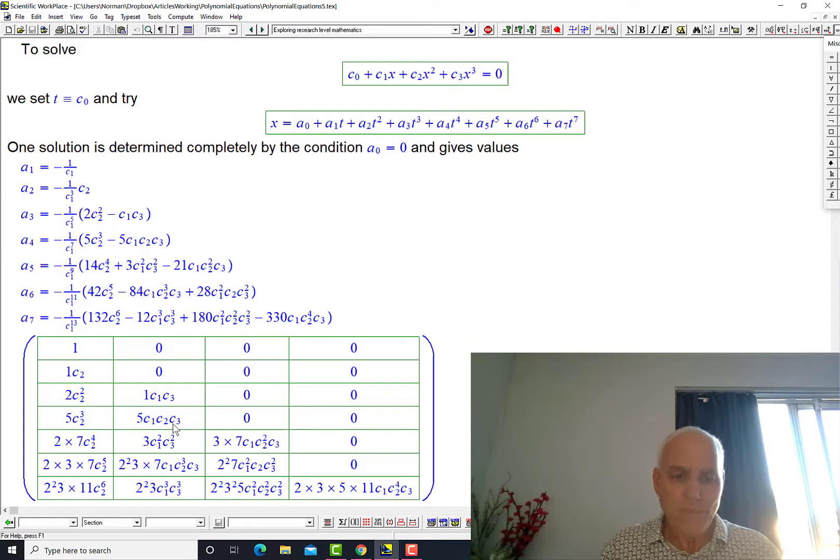I left you with this and maybe you've had a go and probably you've found it challenging. So it's not so easy to figure out which numbers, which products of small primes are appearing in front of these terms and why.